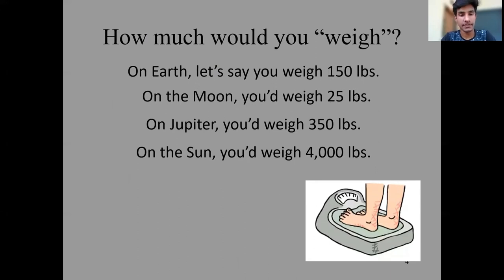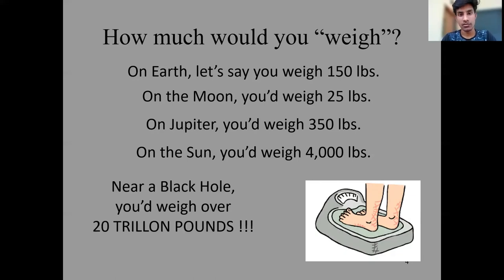How much would you weigh? On Earth, let's say your weight is 150 pounds. On Moon, your weight is 25 pounds. On Jupiter, your weight is 350 pounds. On the Sun, your weight is 4,000 pounds. And your usual weight on a black hole is about 20 trillion pounds. So due to gravity, our weight on a black hole is too much high.